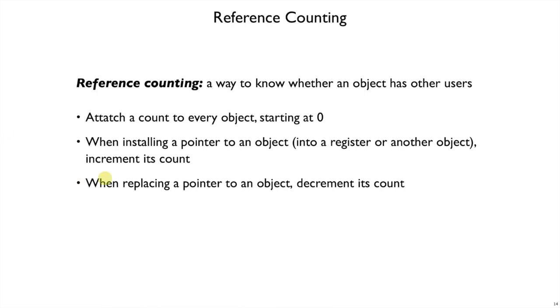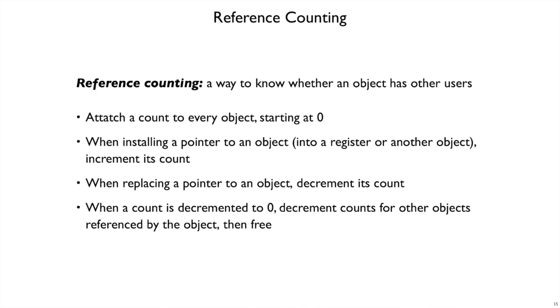When we stop referring to an object, that is when there's a register referring to the object and we're going to change the register, or when we lose some object that was referring to the object in a different way, then we'll decrement the object's count. If we decrement an object's count to zero, then that's where we put the free. At that point, we know there are no other references to the object, and it's safe to free it.